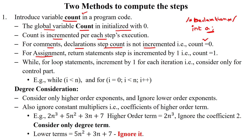For assignment operations and written statements inside the methods of Java programming, the count is incremented by one. So here the count will be incremented by one. For example, using a = 10 and writing b — for these two statements, we will increment the count variable by one.